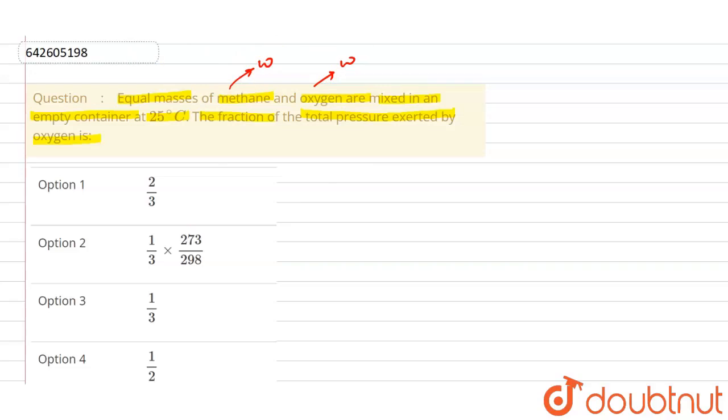So what will be the number of moles of methane? Number of moles of methane (CH4) will be the given mass w divided by molar mass, which is 16. After that, number of moles of oxygen (O2) - given mass again w, same mass is given, and molar mass of oxygen will be 32.